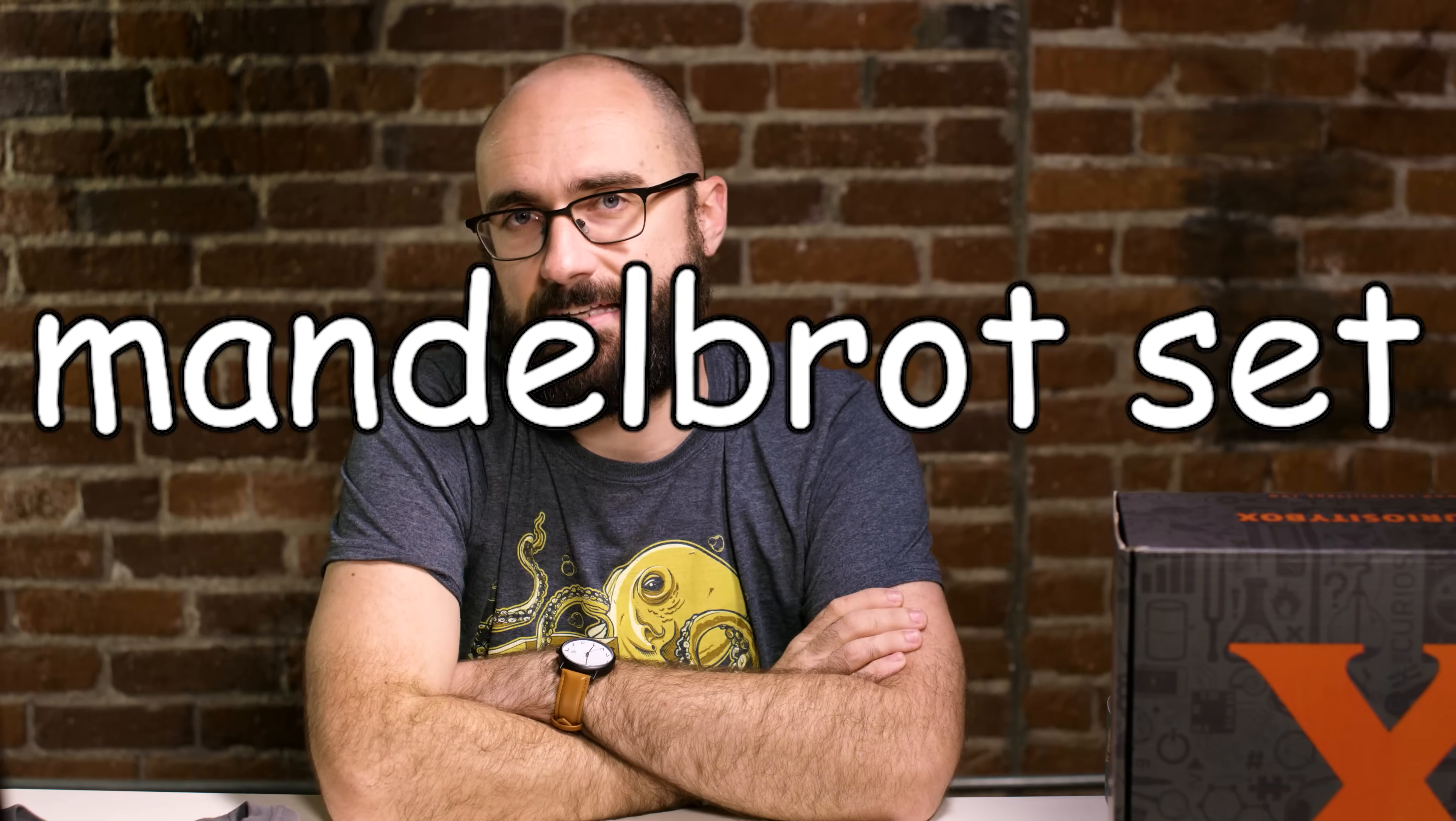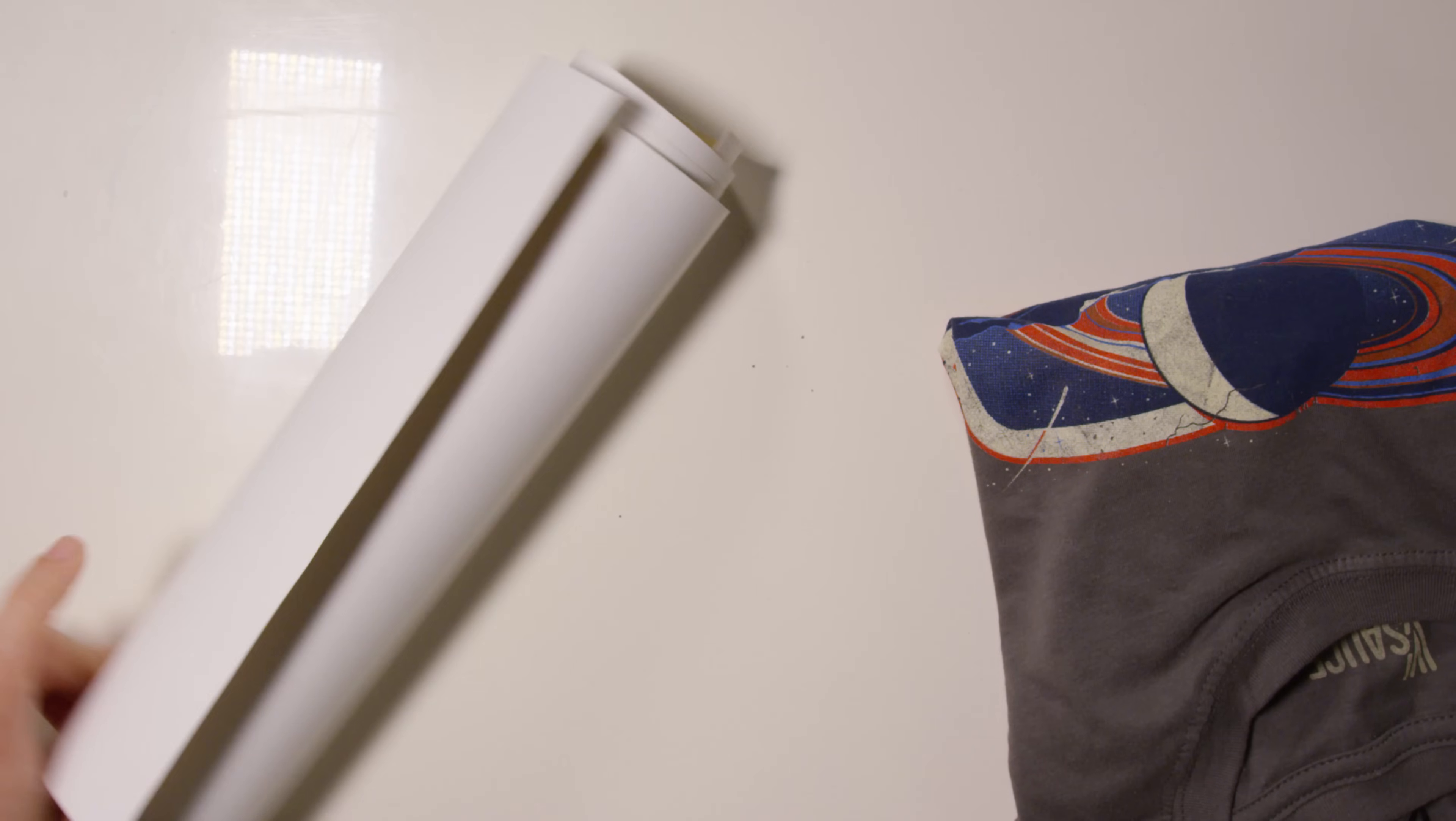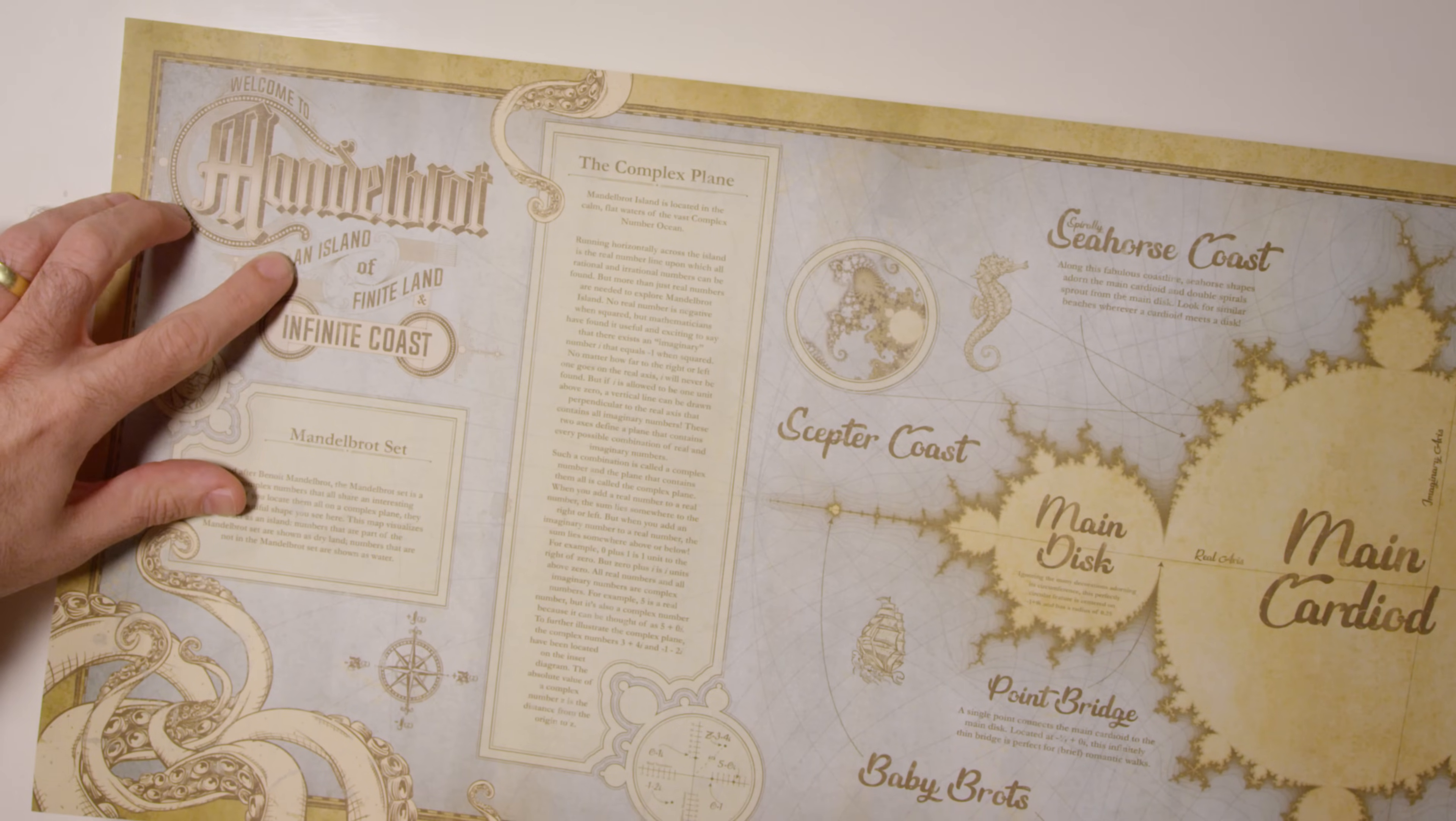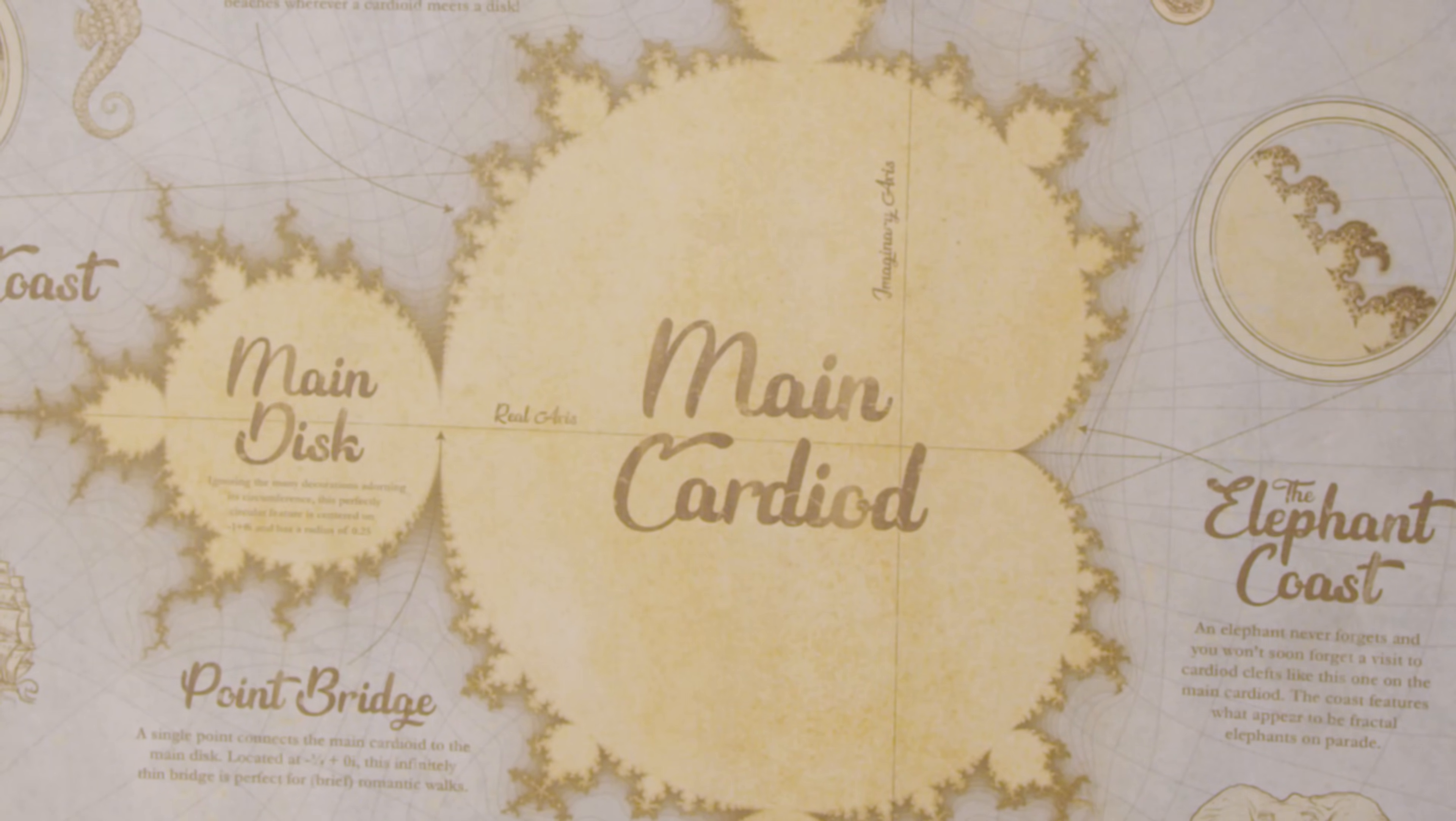Pretty exciting stuff but we're here today to talk about the Mandelbrot set. It is a famous set of complex numbers named after mathematician Benoit Mandelbrot. I got together with our designer John Lazer and we designed this poster. It is a beautiful thing. It imagines the Mandelbrot set as an island of finite land and infinite coast. It has all kinds of information about the set and it imagines all the different features of the set as actual geographic features.